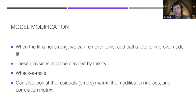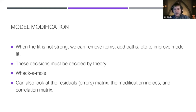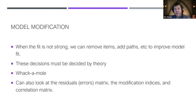For model modification, if we have a bad model we do what's called model trimming, leveraging modification indices to see which path changes would improve model fit. You want to use those suggestions only in conjunction with theory. If you just do whatever the computer says, it becomes a game of whack-a-mole with errors. Always let theory be your guide.